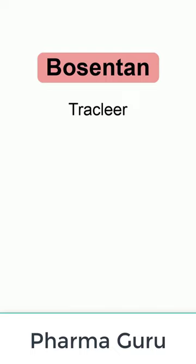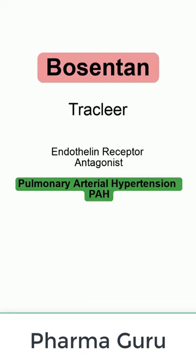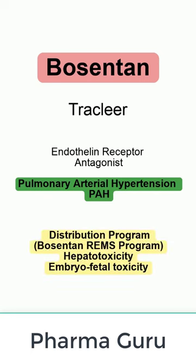Bosentan, an endothelin receptor antagonist, is used for the treatment of pulmonary arterial hypertension. In the U.S., it is subject to a boxed warning and restricted distribution program.